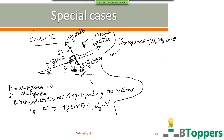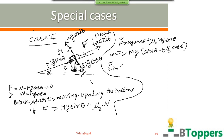So the minimum or least value of the force to be applied on the block parallel to the inclined surface so that the block just starts sliding up along the inclined plane will be F_min equal to mg(sin θ + μs cos θ).